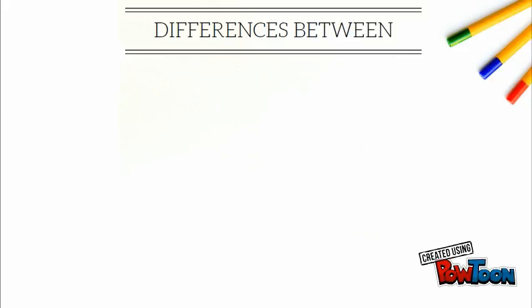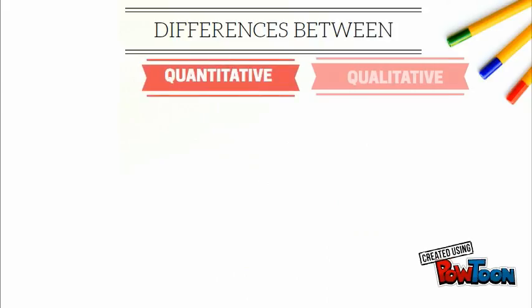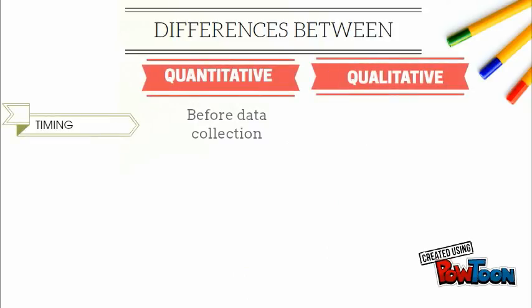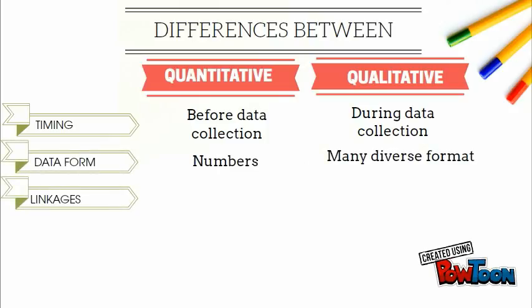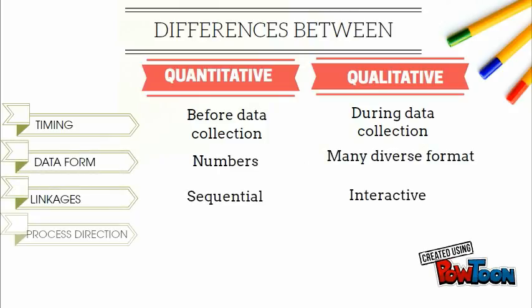let us have a short recap of the differences between quantitative and qualitative measurements. We know the measurement process areas, namely: measurement design timing, final data form, links of constructed data, and process direction.